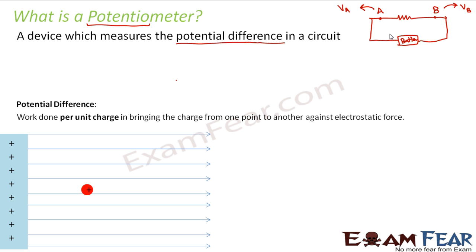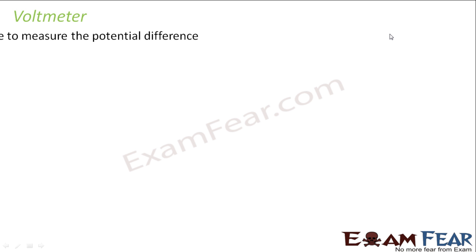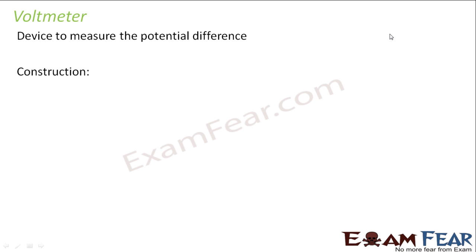So that was an introduction to the potentiometer. Our agenda now is to understand why, when we already have a voltmeter, do we need the potentiometer at all. In order to understand that, let us first see what a voltmeter is and what does it do. A voltmeter is a device used to measure potential difference — so what is its construction and how does it work?